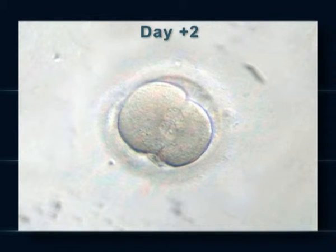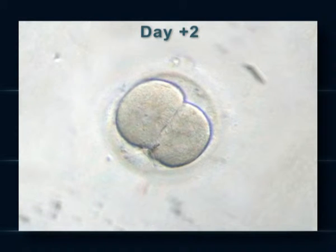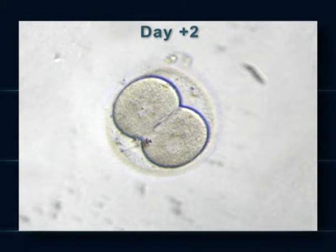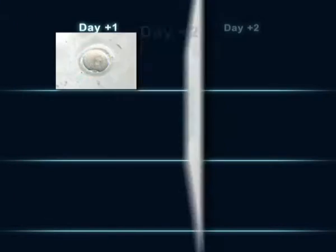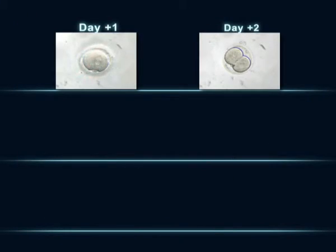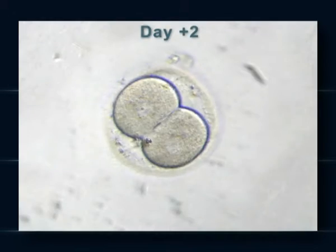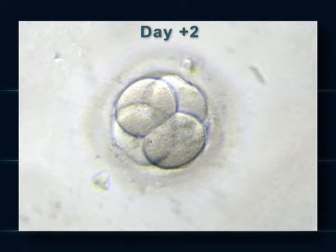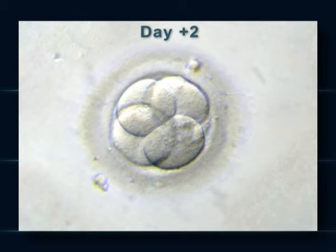Two days after puncture, the embryo divides itself and contains two cells with one nucleus per cell, which in turn starts to divide into an embryo of four cells if its development is optimal.